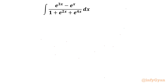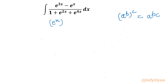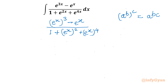I will solve this question using substitution and I will use it twice. As you can see, exponents are involved, so we can apply the exponent property: a^b whole power c can be written as a^(bc). Using this property, I can rewrite the integration as (e^x)³ minus e^x divided by 1 plus (e^x)² plus (e^x)^4, dx.